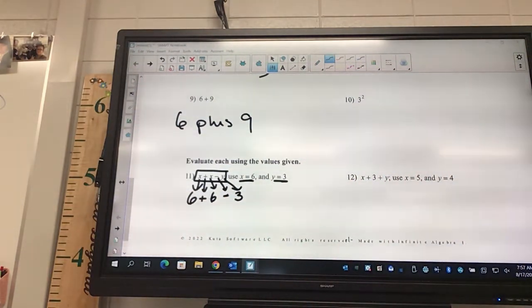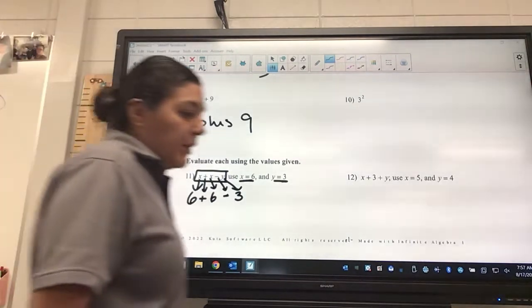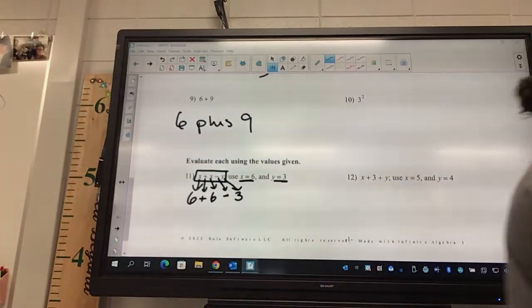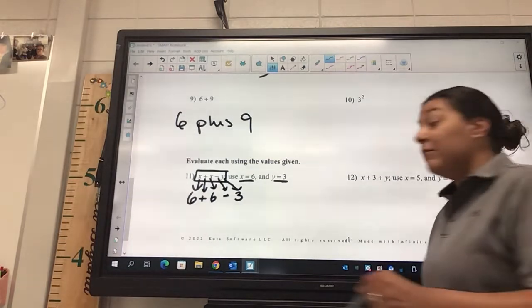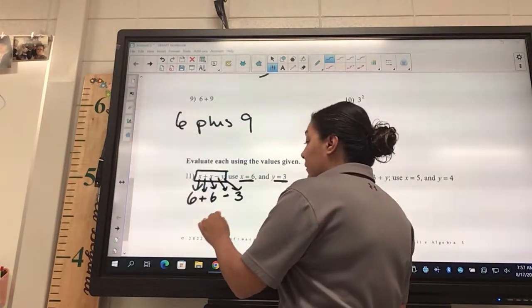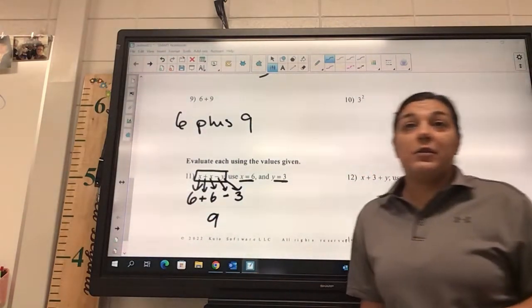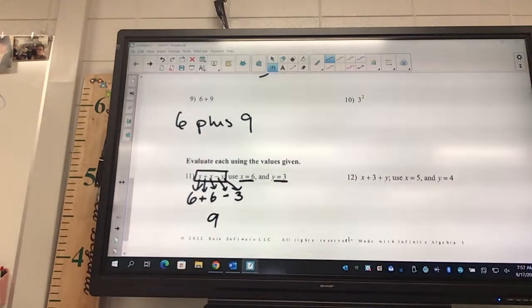If there's parentheses, do that first. If there's exponents, do that next. So, our first part is an x, and so we're going to put a six there. And then we have a plus sign, so we're going to drop that down. And then we have another x, so we're going to put what there? Six. And then we have a minus sign, and then we have a y, which is going to be three.